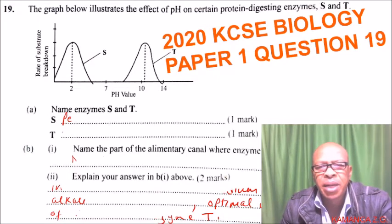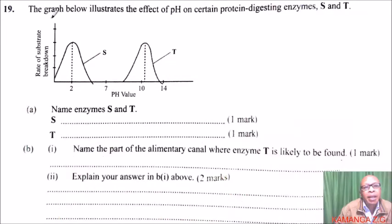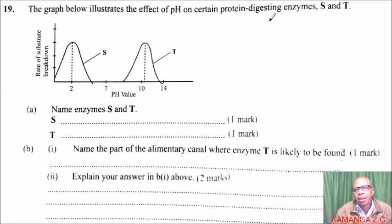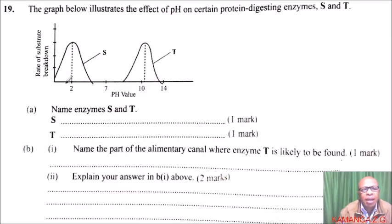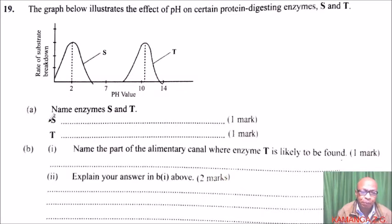This is question number 19, 2020 KCSC Biology Paper 1. The graph shows the effect of pH on certain protein-digesting enzymes. We have the rate of substrate breakdown on the y-axis. Enzyme S is operating in an acidic environment, and enzyme T is operating in an alkaline or basic environment. Part A asks us to name enzymes S and T.